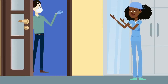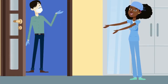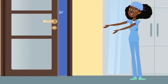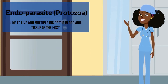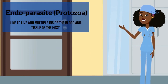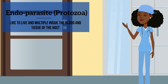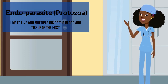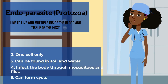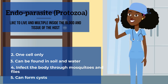So number one is ectoparasite. Number two is endoparasite. And just like its name sounds, it likes to live inside of the blood and tissue of its host. There are five neat tricks that you can use to guess if something is an endoparasite.